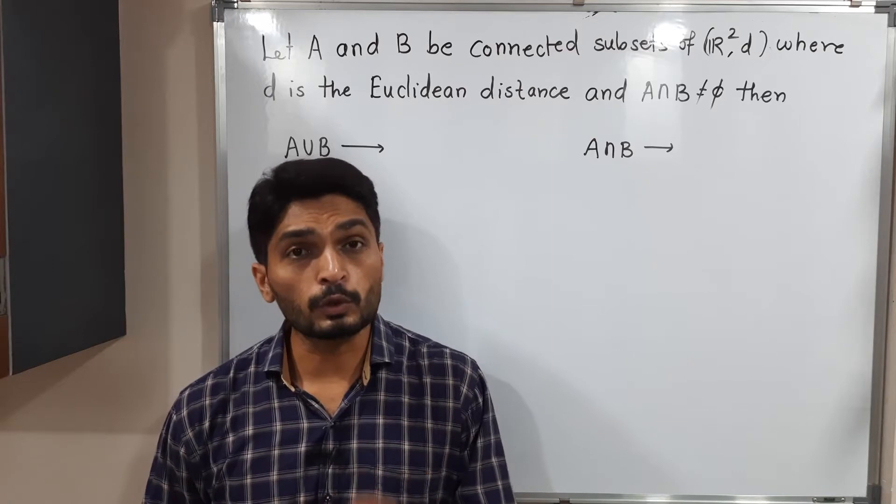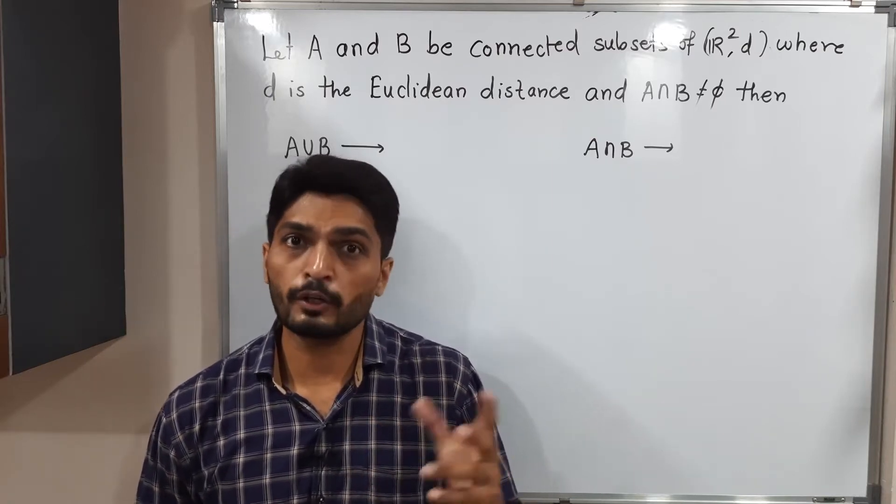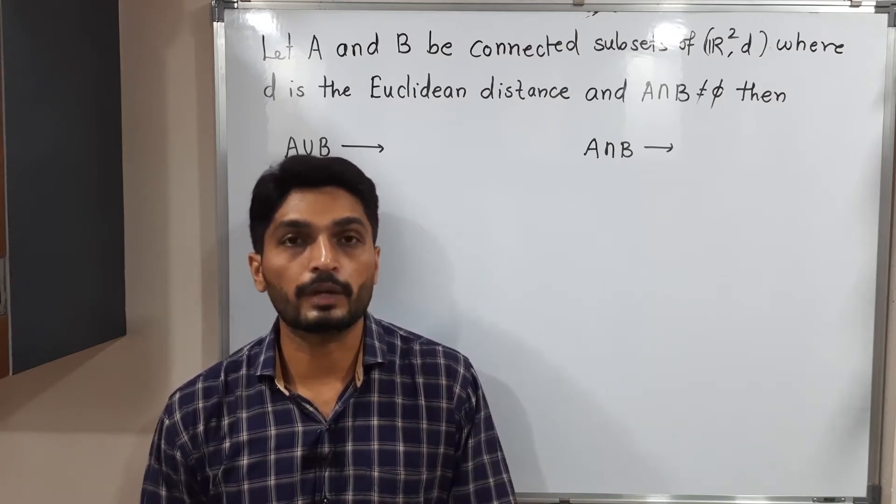Then we have to conclude about A union B and A intersection B. So these two sets are connected or disconnected? This is what we have to write.